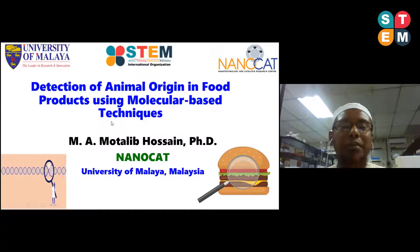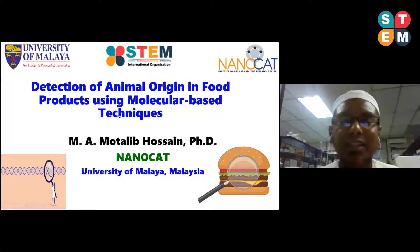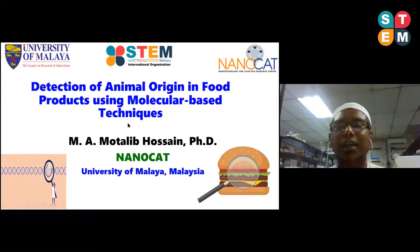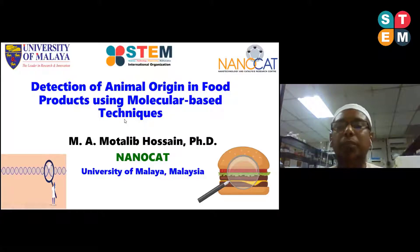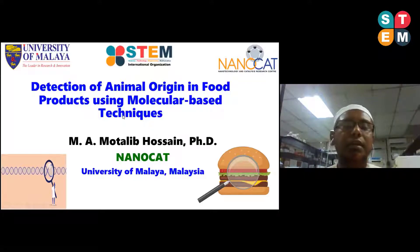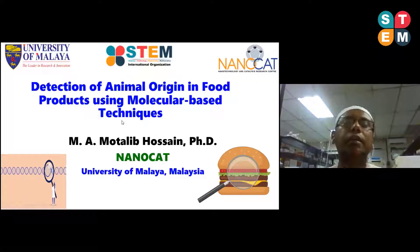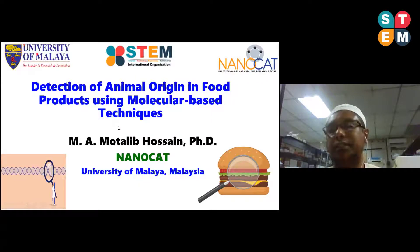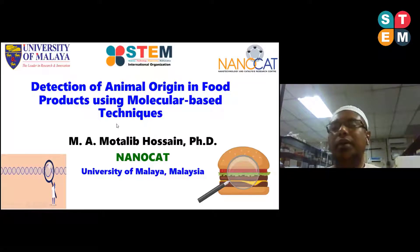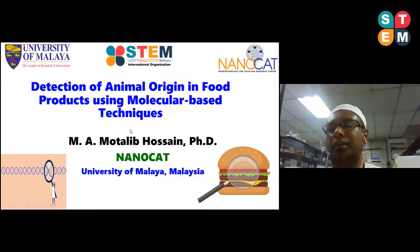I am Muthalif Hushain, a Doctorate Research Fellow at the Nanotechnology and Catalysis Research Center, University of Malaya, Kuala Lumpur, Malaysia. My research mainly focuses on authentication of animal species in food products using molecular-based techniques. In addition, I am also involved in the application of nanomaterials in agriculture.